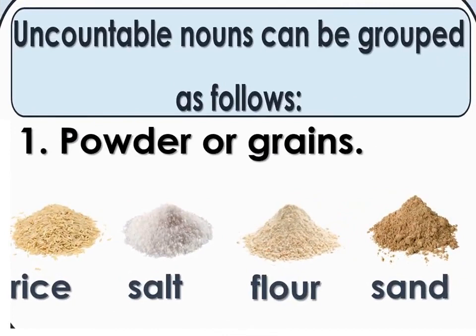Uncountable nouns can be grouped as follows. First one: powder or grains — rice, salt, flour, sand. These are uncountable nouns. We cannot count them. We cannot count the rice, salt, flour, or sand.